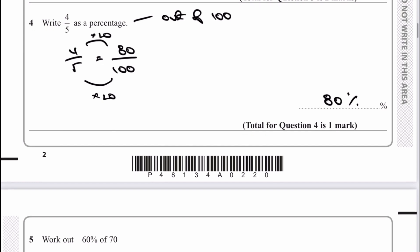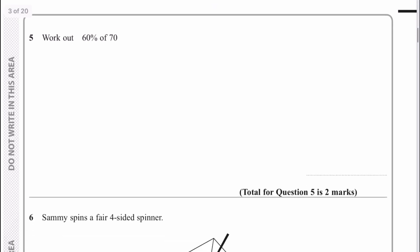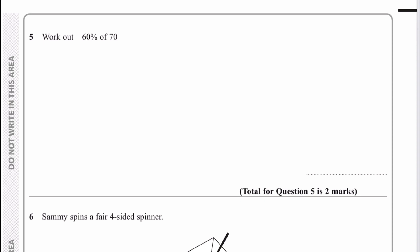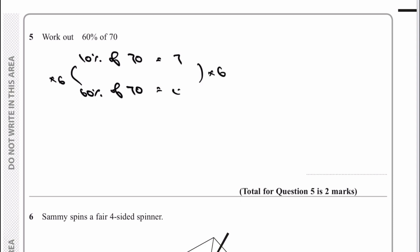Let's move on then to question number 5. Please do stop the video and have a go at this particular question. We're asked to work out 60% of 70. We can work out 10% of 70, which is going to be equal to 7. Therefore, 60% is going to be multiplying this by 6, so I've got to multiply the 7 by 6 as well — that's going to give me 42. And that's the answer to question number 5.